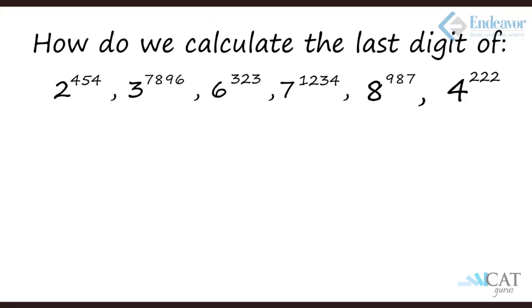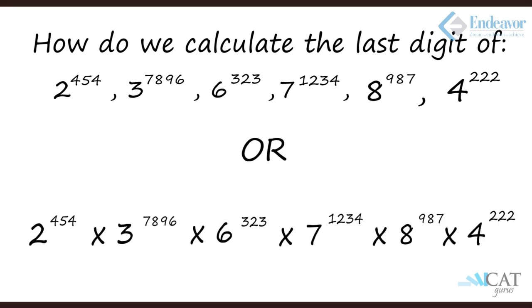Hello, how do we calculate the last digit of big numbers: 2 to the power 454, 3 to the power 7896, 6 to the power 323, 7 to the power 1234, 8 to the power 987, or 4 to the power 222? Let's make it tougher. Let's multiply all of them. How do we do it now? It looks tough. Let's make it slightly simple.